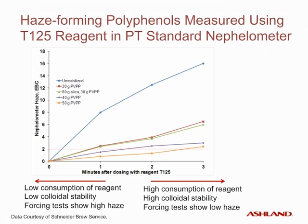Similarly, this graph shows measurements of polyphenol levels using the T125 reagent in the PT standard nephilometer. The quantity of reagent required to develop a haze increase of 2 EBC is determined. Low consumption of reagent is an indication of high polyphenol levels, which leads to low colloidal stability. High consumption of reagent correlates to low levels of polyphenols leading to high colloidal stability. This inverse relationship is a result of the nephelometric titration method — the lower the quantity of polyphenols in the beer sample, the more reagent it takes to reach a given haze value.